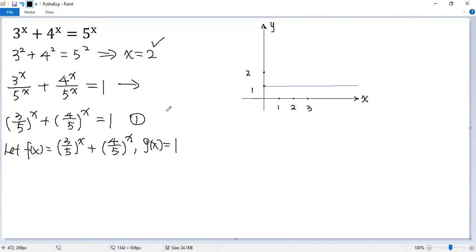Finding the solutions of equation 1 is equivalent to finding the intersections of the two functions f(x) and g(x). Now, this one is an exponential function of base less than 1, so it is decreasing, right?